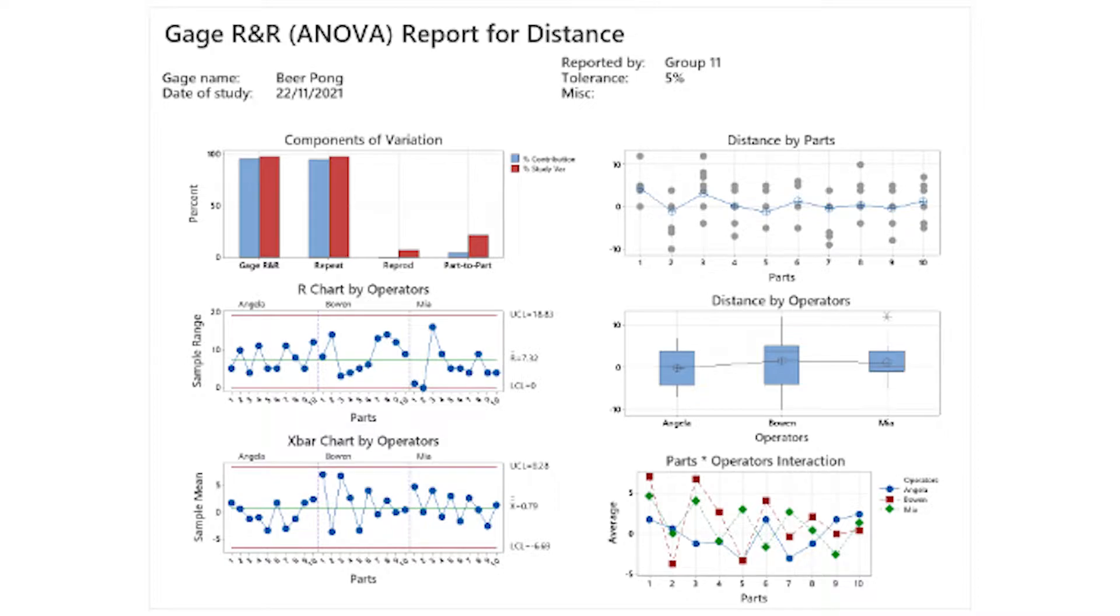We perform a gauge R&R analysis on our measuring system. The gauge R&R percentage contribution is higher than 30%, thus it is not ideal. The problems must be identified to remove root cause in order to improve the measurement system. The reason that repeatability contributes majorly to the variation is because the chances of throwing a ping pong ball and making it into the cup by an operator varies from round to round.